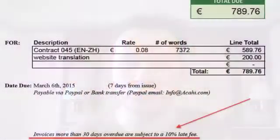My last line always says: 'Invoices more than 30 days overdue are subject to a 10% late fee.' You can make it 7 days or 15 days overdue — I guess I'm a nice guy. You can also have an increasing late fee: X percent every Y number of days, so if they're late by a week they pay one amount, late by two weeks they pay more. But that makes life complicated, and I find that just having one late fee is enough incentive for them to pay on time.